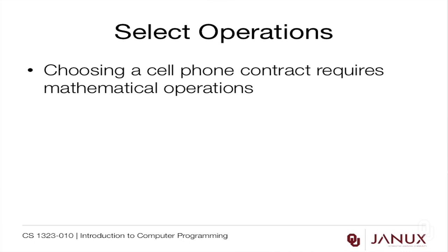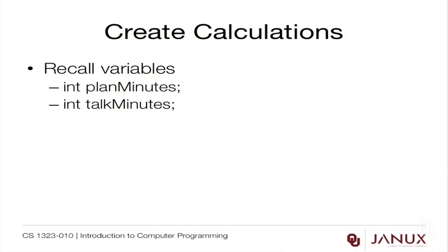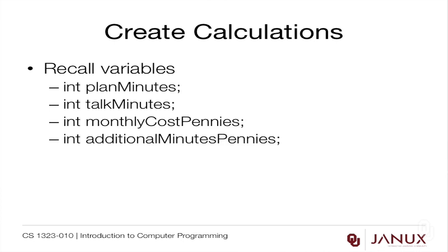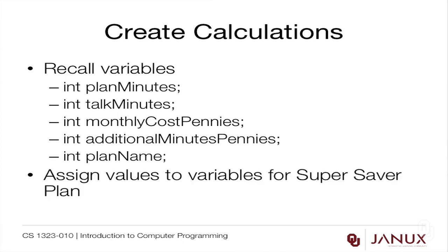The next thing we need to do is select some operations. Choosing a cell phone contract requires mathematical operations. So the first thing we need to do is remember what our variables were called — we chose these in the last version of this program. There's int plan_minutes, int talk_minutes, int monthly_cost_pennies, int additional_minutes_pennies, and int plan_name. We want to assign values to the variables for the super saver plan. It doesn't really matter whether I look at the super saver or the big talker first.